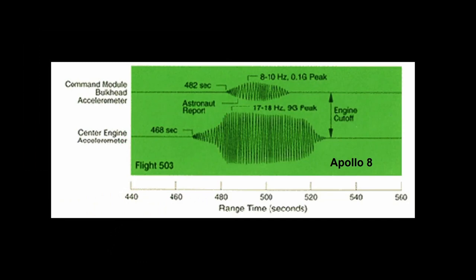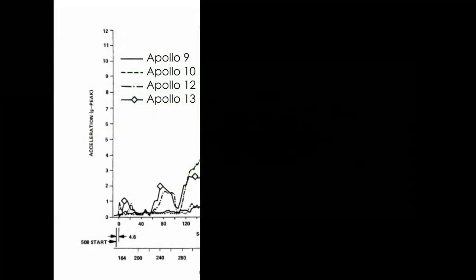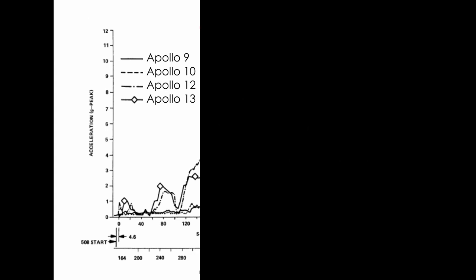This data is from Apollo 8. The top trace shows the effect on the Apollo command module of the pogo. It was at 8 to 10 hertz, so think of watching a movie in a theater with very good sound system, one that you feel. That's what the astronauts felt, but it was only about one tenth of a G, so it was noticeable, but not significant. But remember that the engine was flexing the support beams up and down. The bottom trace shows the movement of the engine, and it was at 9 Gs, which was getting close to the structural limits at about 15 Gs. Here's a chart showing the acceleration of the center engine during four Apollo flights, 9, 10, 12, and 13. For the first three it was fine, within structural limits, and therefore deemed not to be a flight hazard.